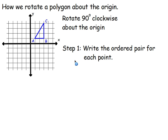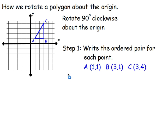The first step is we're going to write down the ordered pair for each point. A — we went one right, one up, so that's (1, 1). B — we went three right, one up, so that's (3, 1). And C — we went three right and four up, so that's (3, 4). Okay, so that's step one — we just plotted all our points.